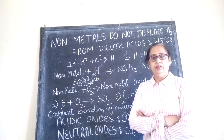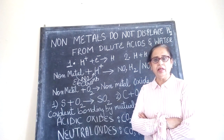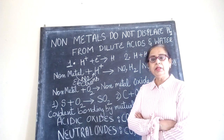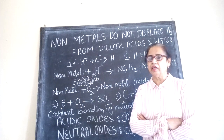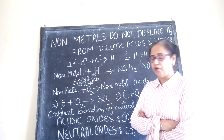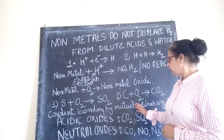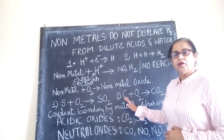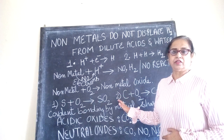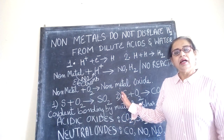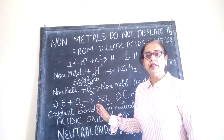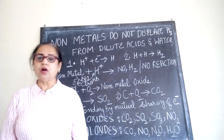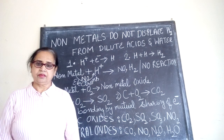The basics of covalent bonding you are going to study in the chapter on carbon and its compounds, and I will be sending you another video explaining covalent bond formation. Here, we just note that there is mutual sharing of electrons between the atoms of the non-metal and that of oxygen, leading to the formation of binary compounds called non-metal oxides.